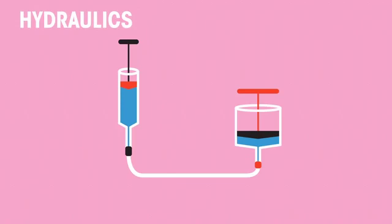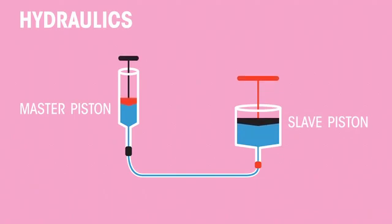Hydraulic systems consist of two pistons. A master piston, where pressure is applied, and a slave piston, which the pressure is transmitted to. Let's look at an example of how this system multiplies forces.